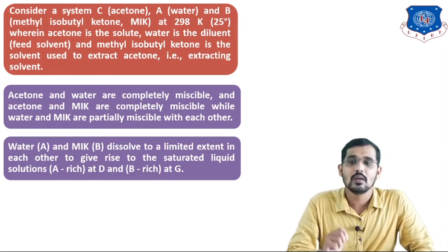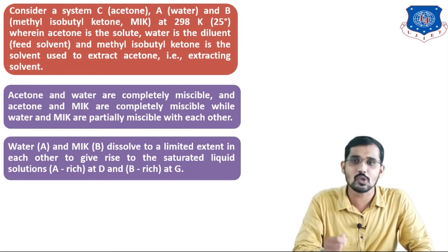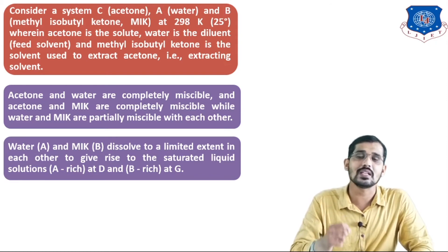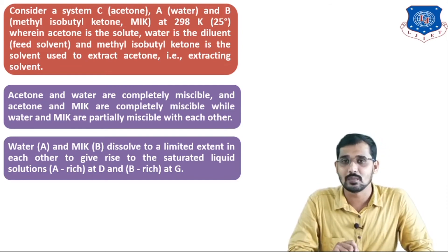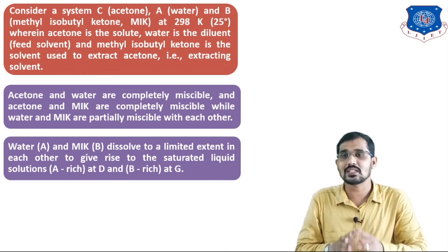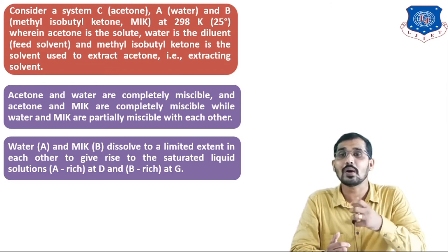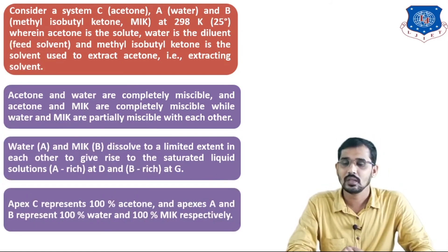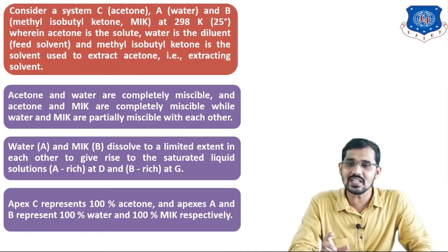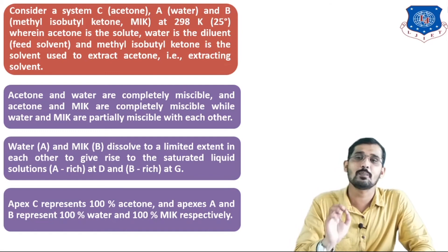Water (A) and MIK (B) dissolve to a limited extent in each other, giving rise to saturated liquid solutions: an A-rich solution at point D and a B-rich solution at point G. In a ternary system with one pair partially miscible, one component from the solution is partially miscible with the extracting solvent while the other components are completely miscible. Apex C represents 100% acetone and apexes A and B represent 100% water and 100% MIK respectively.